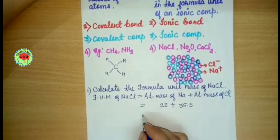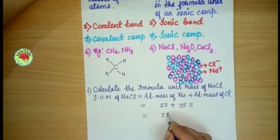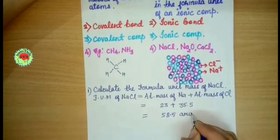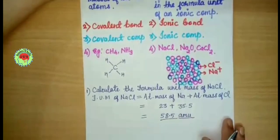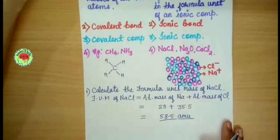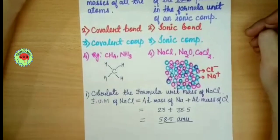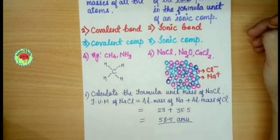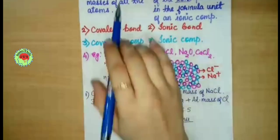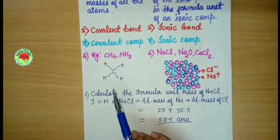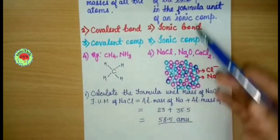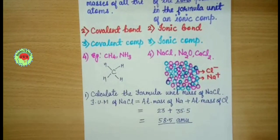Now if we calculate, the answer will be 58.5 atomic mass units. So children, this is the difference between molecular mass and formula unit mass. Formula unit mass always comes out of ionic compounds in which there are ions, and molecular mass comes out of molecules in which there are covalent bonds.